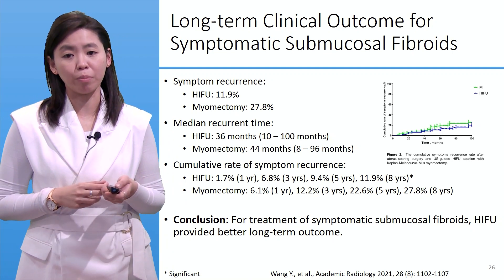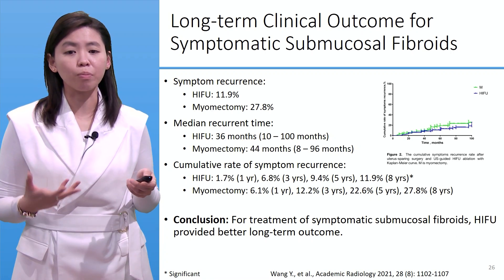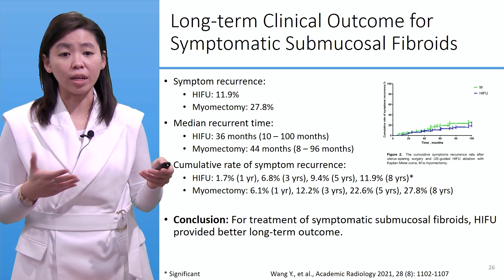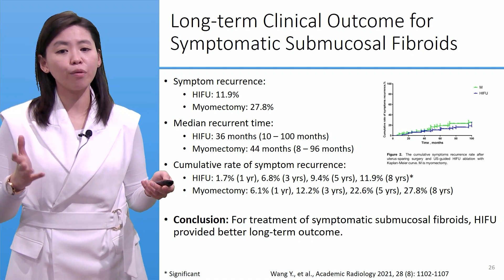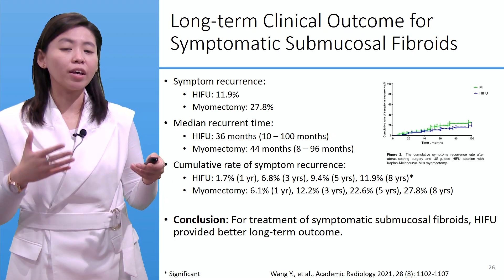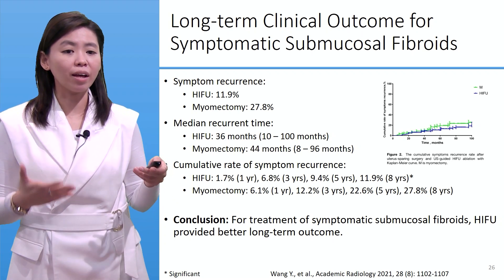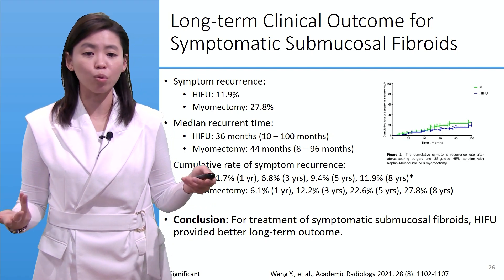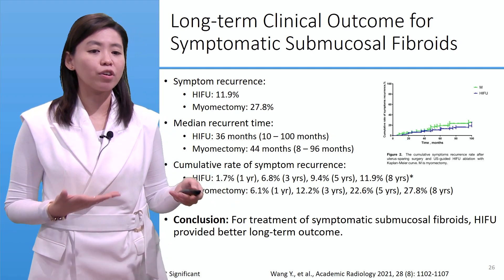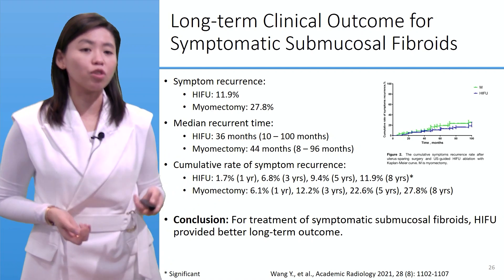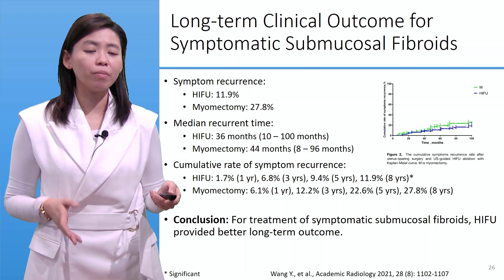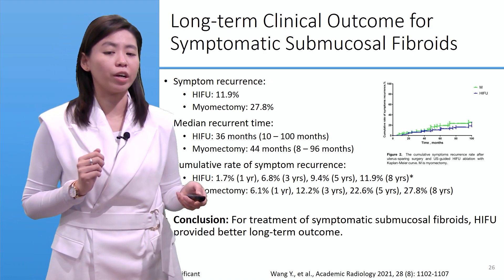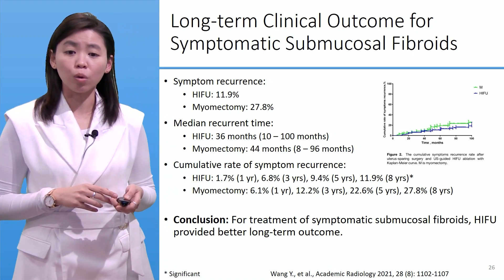Looking at symptom recurrence: HIFU had 11.9% symptom recurrence, lower than myomectomy at 27.8%. The median recurrence time was about 36 months (range 10–100 months) for HIFU versus 44 months (range 8–96 months) for myomectomy. The cumulative rate of symptom recurrence for HIFU was approximately 1% at one year, 6.8% at three years, 9% at five years, and 12% at eight years — significantly lower than myomectomy at 6%, 12%, 23%, and 28% respectively. The conclusion: HIFU provided better long-term outcomes for symptomatic submucosal fibroids.